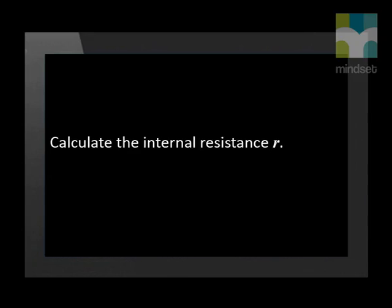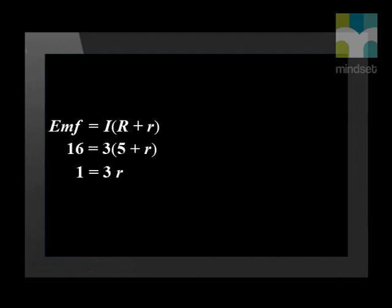Now we use the EMF together with the total resistance of the circuit including internal resistance r and calculate internal resistance. Let's substitute our values into our EMF formula and we find the internal resistance r equals 0.33 ohm.